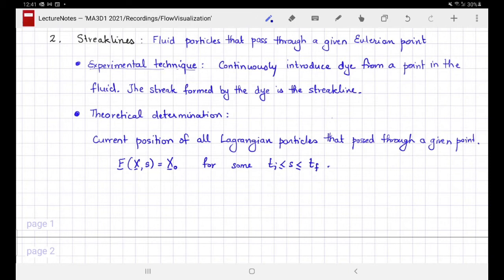The next fluid visualization technique we are going to use are the streak lines. Streak lines are the locus of all the points that have ever passed through a given Eulerian point. The experimental technique makes it clearer what a streak line is. Imagine continuously introducing dye from a point in a fluid. The dye will be carried by the fluid, and once released, its position is no longer under your control. You can only control the point from where it is released. The streak formed by the dye is the streak line.